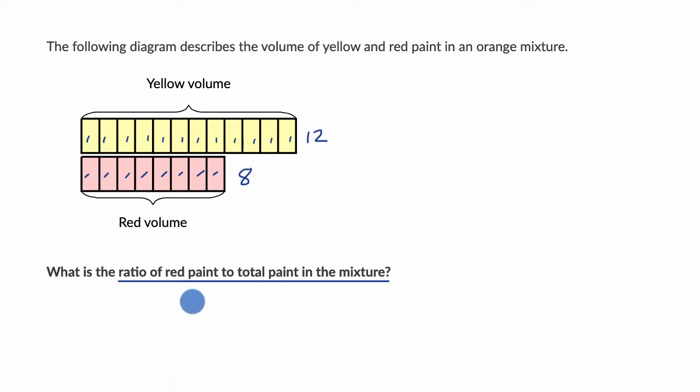All right, so if we want to think about red paint, it looks like we have eight parts red paint. And if we think about the ratio of that towards total paint, you might be tempted to put a twelve there, but that's not the total paint, that's just the yellow paint.